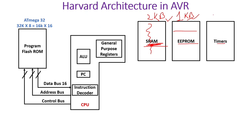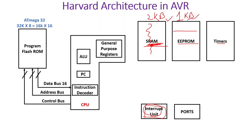ATmega32 has 3 timers: Timer 0, Timer 1, and Timer 2. Timer 1 is a 16-bit timer, while Timer 0 and Timer 2 are 8-bit timers. There is also an interrupt unit. It handles both hardware interrupts — INT0, INT1, and INT2 — and software interrupts such as timer interrupts and serial interrupts. In total, there are approximately 23 interrupts in the ATmega32 microcontroller, all managed by the interrupt unit.